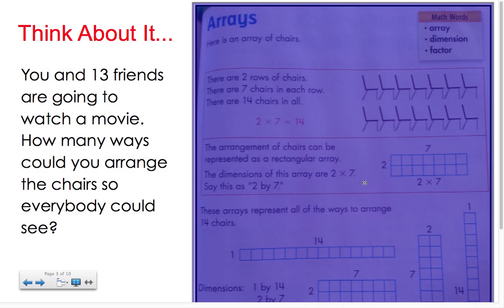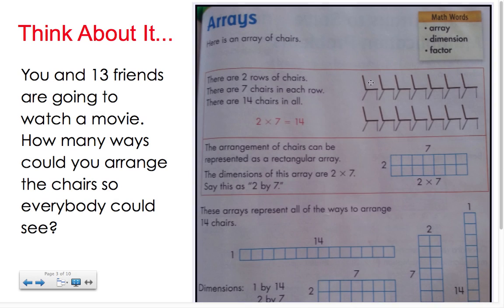The way that we arrange the chairs would be called an array of chairs. Here, there are two rows of chairs and there are seven chairs in each row. So we could determine that there are 14 chairs in all because 2 times 7 equals 14. The arrangement of chairs could also be represented as a rectangular array. The dimensions of this array are 2 by 7. We have two rows with 7 in each row, so we could say 2 times 7.